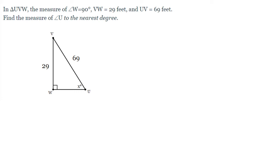We're given right triangle UVW, where the measure of angle W is 90 degrees, VW is 29 feet, UV is 69 feet. Find the measure of angle U to the nearest degree.